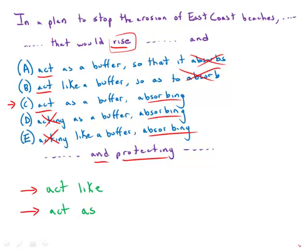'Act like' versus 'act as' is something very important to keep straight for the GMAT. 'Act like' means to adopt the outward behavior of. For example, if I act like a doctor, that implies I'm not really a doctor, but I'm taking on the behavior — doing something a doctor would do, or adopting the outward behavior of a doctor.